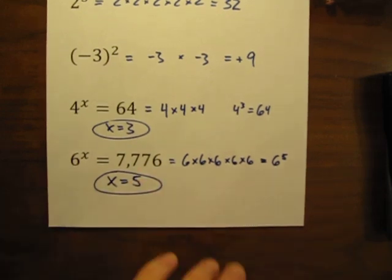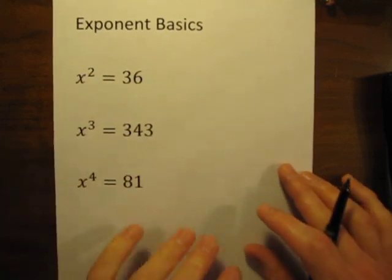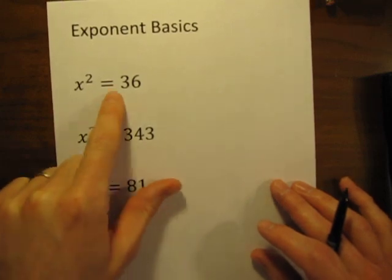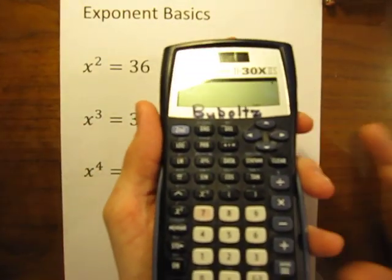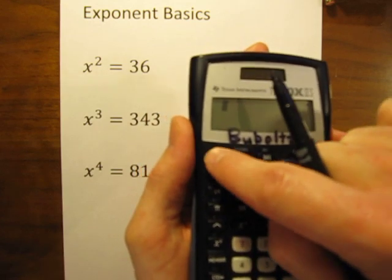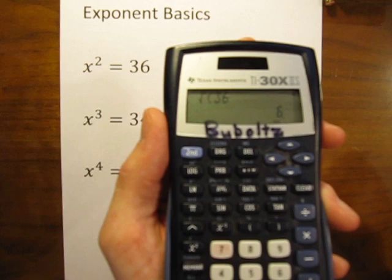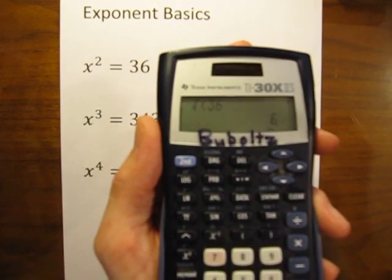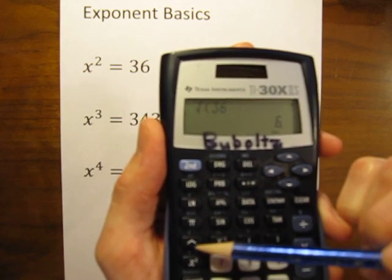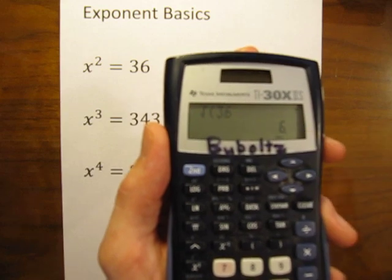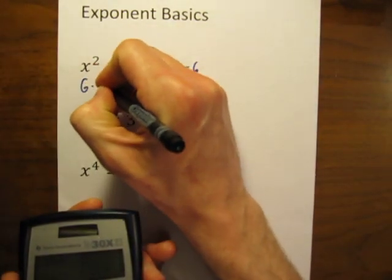One more thing I'd like to show you: what if it's the base we don't know? x squared equals 36. We want to know what times itself equals 36. On your calculator, you can use your square root key. The square root of 36 equals 6. On this calculator, the square root symbol is above the x squared key — hit 2nd and then that key to get square root. So x equals 6, because 6 times 6 equals 36.